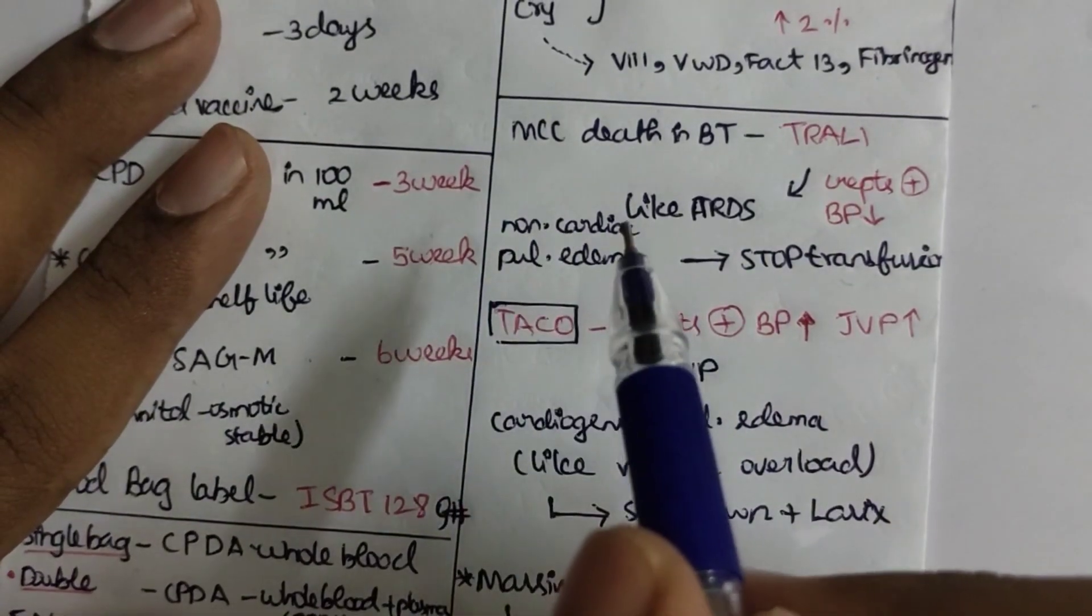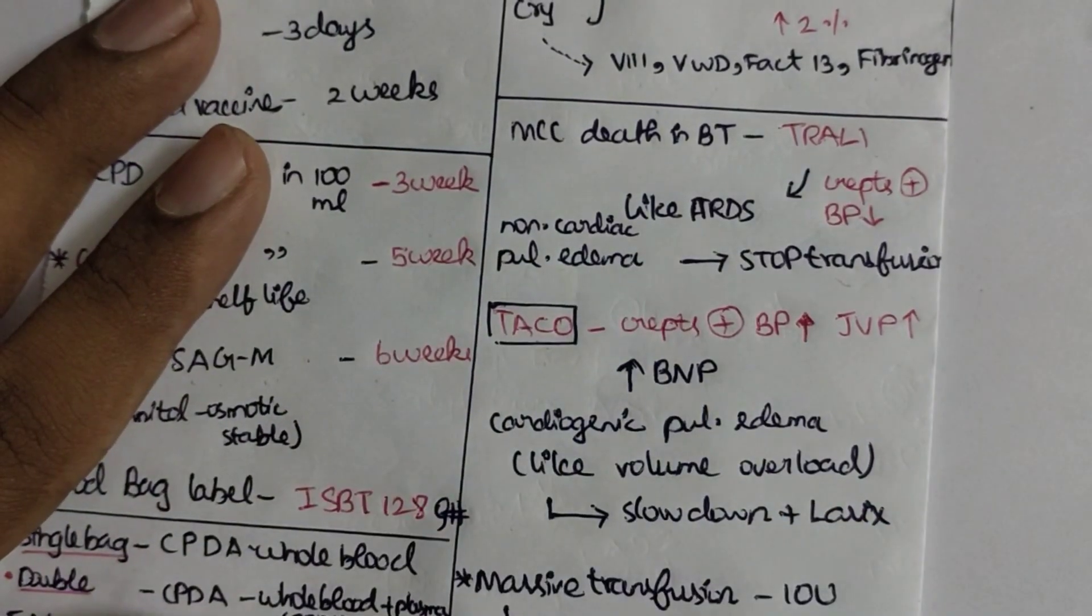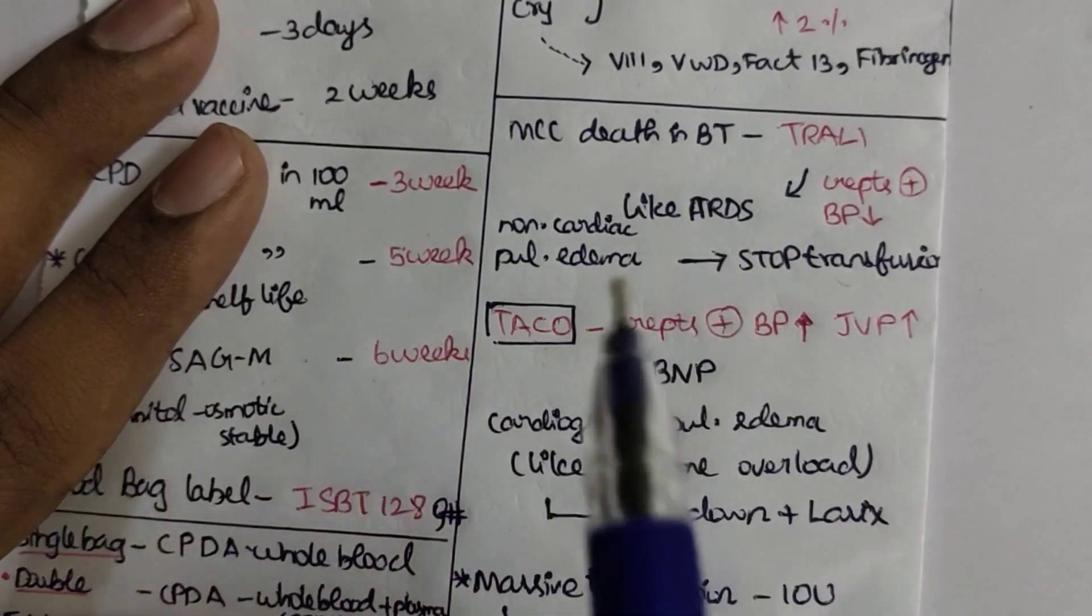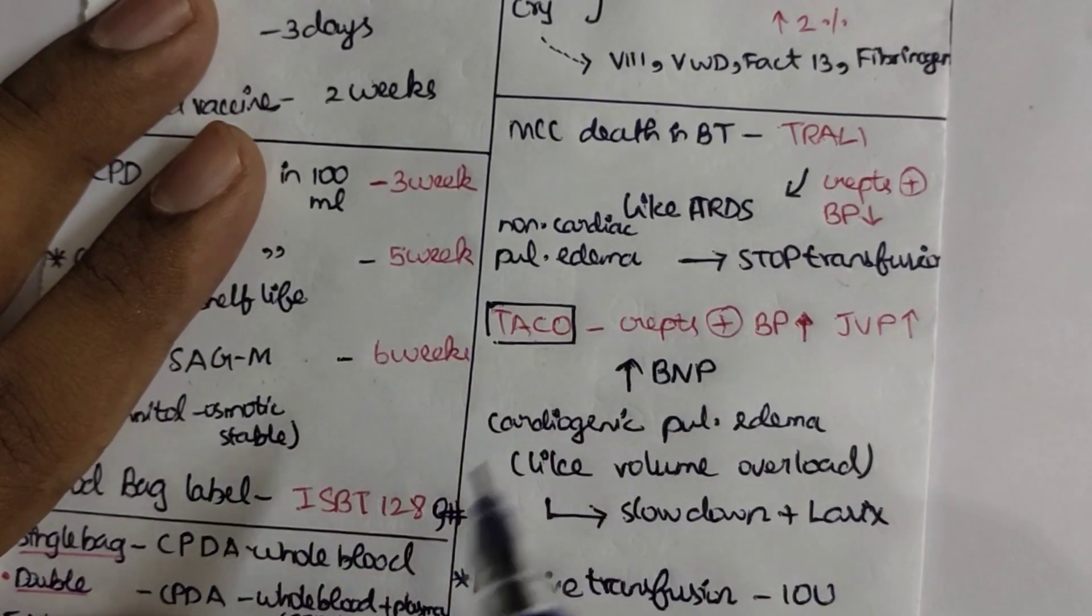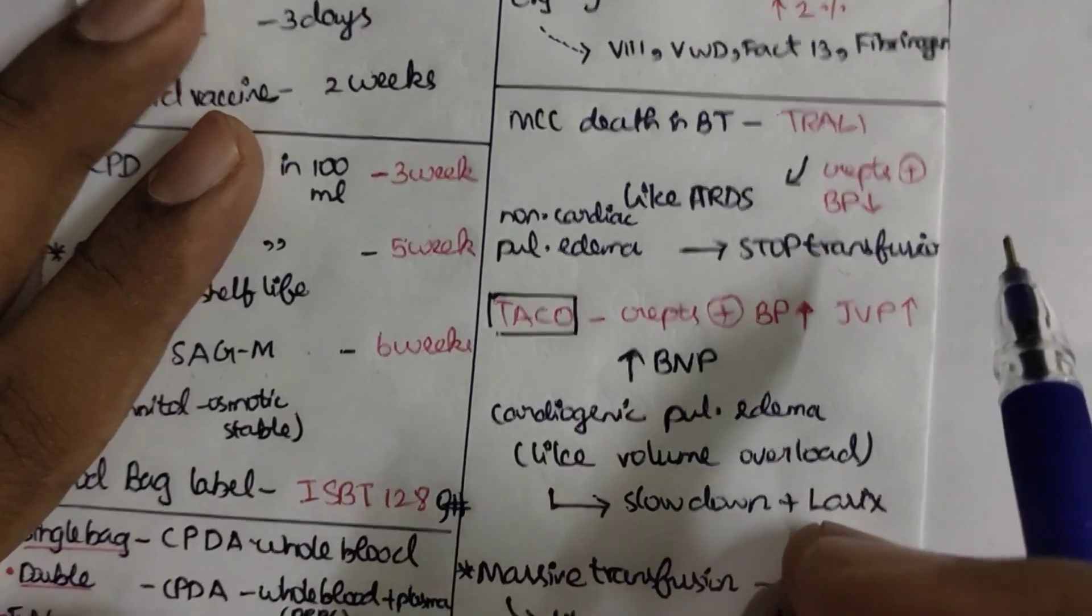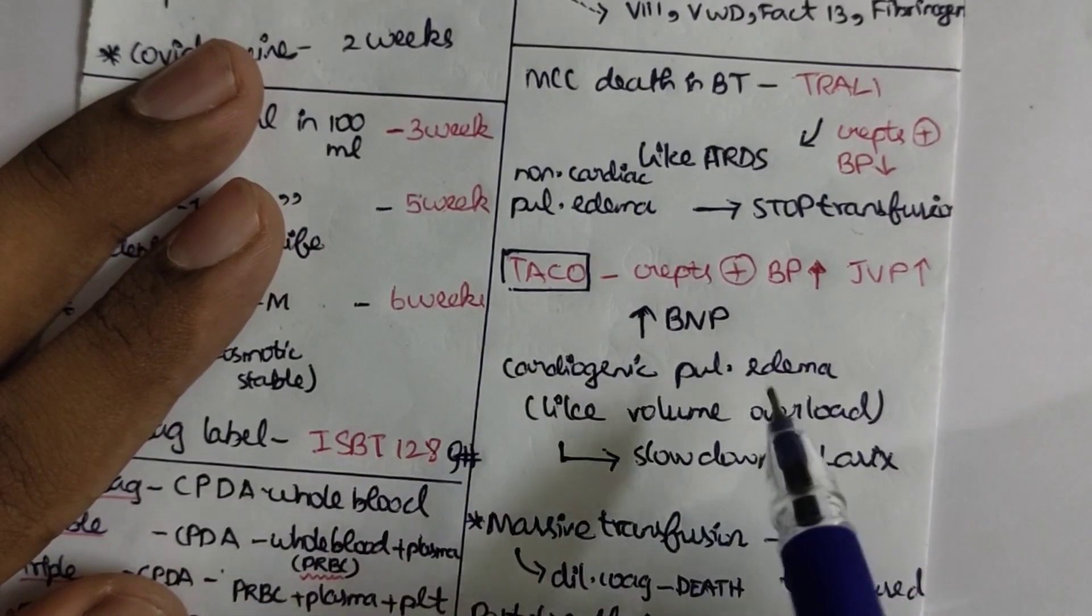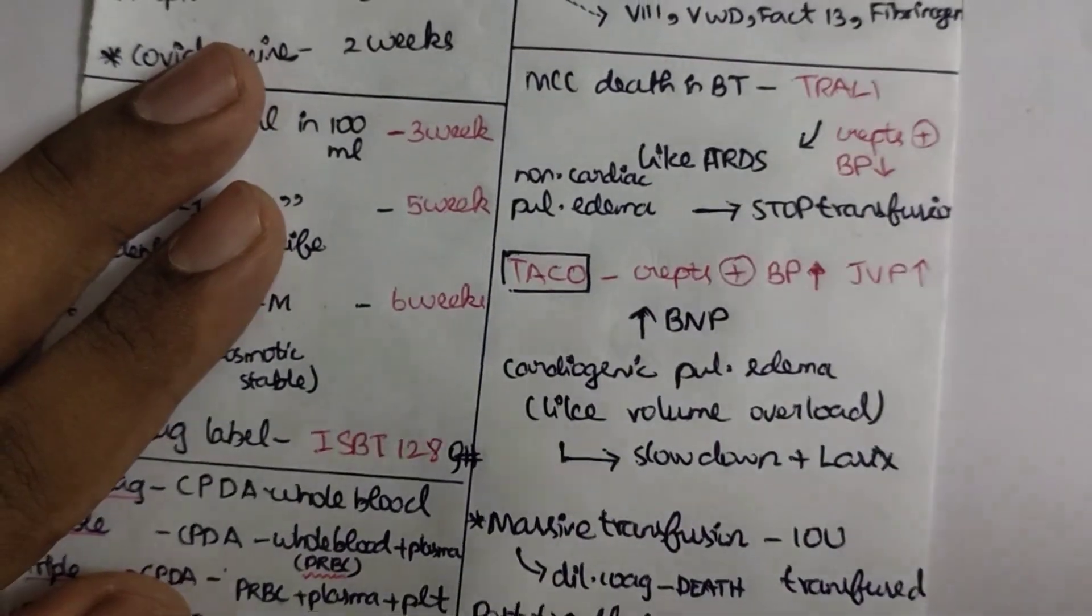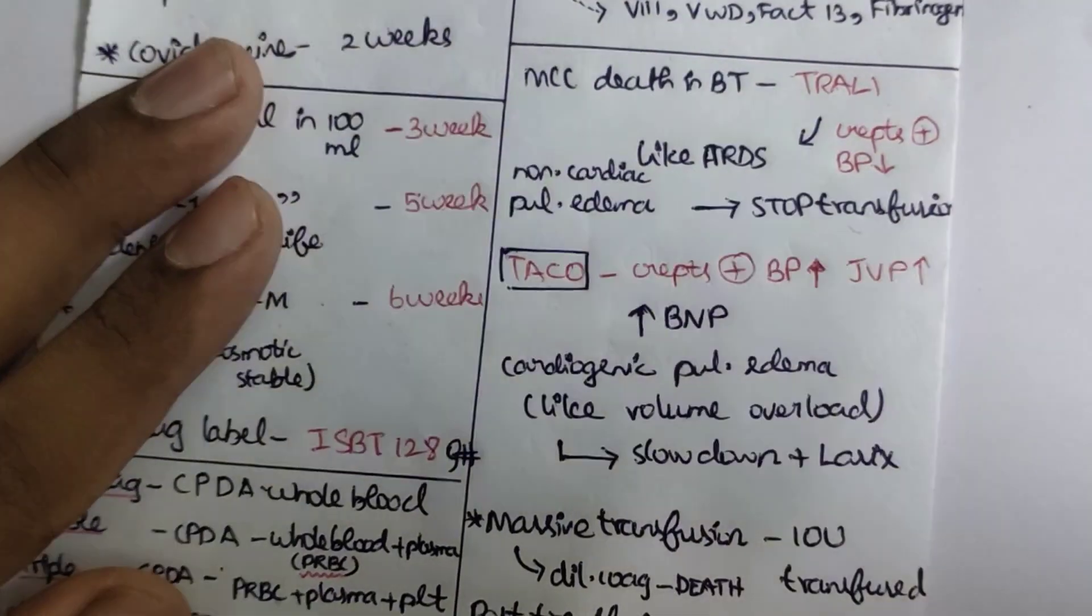Soon after seeing this, you have to stop the transfusion. There is non-cardiogenic pulmonary edema. In TACO, there will be an increase in BP. The same crepitations will be heard. There will be an increase in BP and increase in JVP. This occurs due to increase in BNP, brain natriuretic peptide. It is due to the mechanism of cardiogenic pulmonary edema, like volume overload condition. Here you should not stop it suddenly. You have to slow down the blood transfusion and add Lasix to decrease the volume overload.